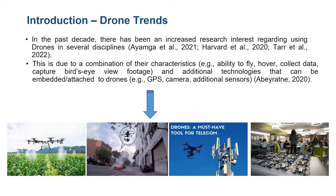Drones have evolved quite a bit and we can see in research literature an increased interest around them. This is based on two factors. The first one is their aerial characteristics that no other robot category possesses — for instance, their ability to fly and to capture aerial data. The second has to do with additional technologies that can be used in collaboration with drones, opening more use cases and making them more appealing. As a result, drones have been used today in various fields, such as agriculture, media entertainment, telecommunications infrastructure, and lastly, there seems to be an increased interest in using drones in education.